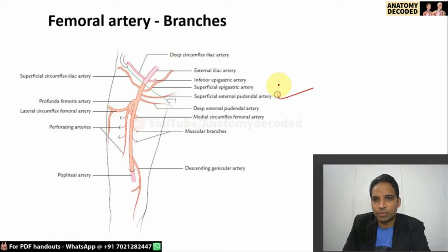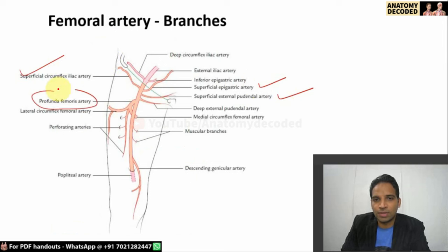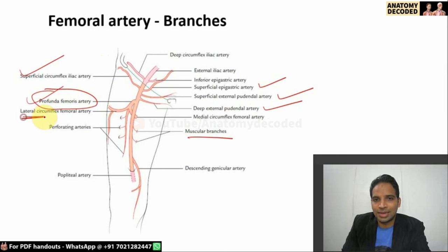The deep branches of the femoral artery include the profunda femoris artery, deep external pudendal artery, and muscular branches. The profunda femoris artery is the largest of all the branches and gives further branches: the lateral circumflex femoral artery and the medial circumflex femoral artery.